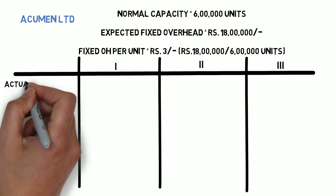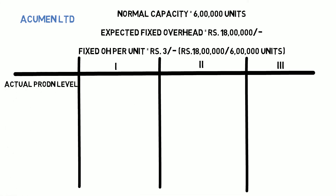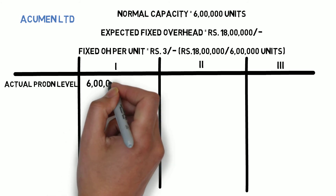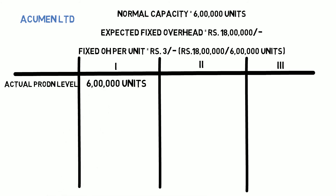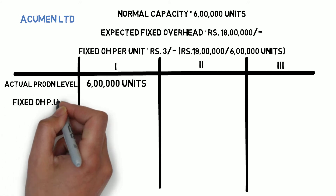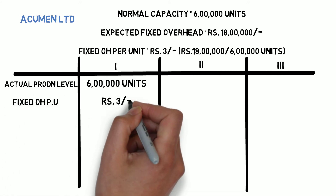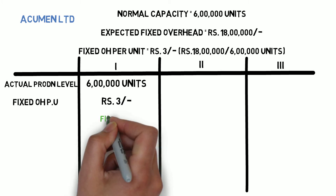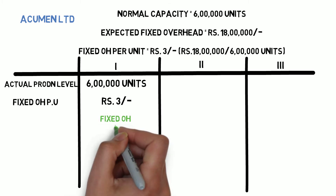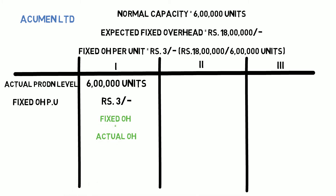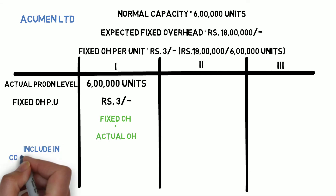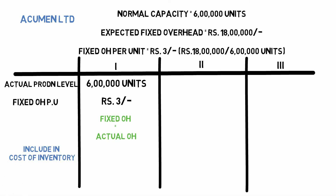We will discuss three cases with different levels of actual production. In the first case, the actual production level is 6 lakh units, so the fixed overhead per unit comes out to 3 rupees. Since the fixed production overhead equals the actual production overhead, we include 18 lakhs — that is 6 lakhs multiplied by 3 rupees per unit — into the cost of inventory.